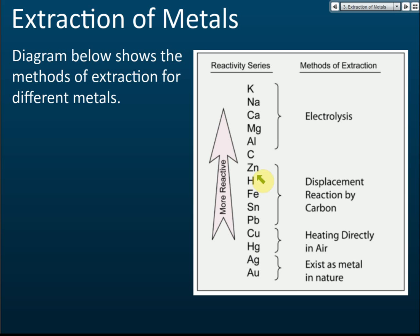This may come up in an exam. They may give you a few metals — zinc, iron, or aluminum — and ask which one is extracted by electrolysis in industry. Now, this reactivity series is not the same as the electrochemical series from previous lessons. It is similar but different: in the electrochemical series, hydrogen is below lead, but in the reactivity series, hydrogen is between zinc and iron.